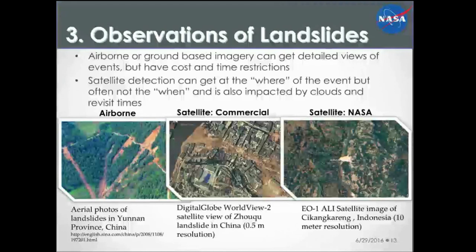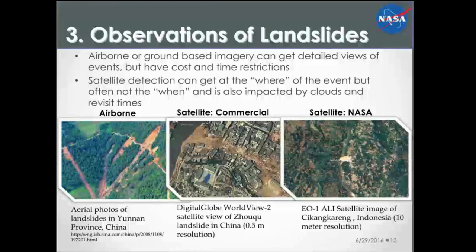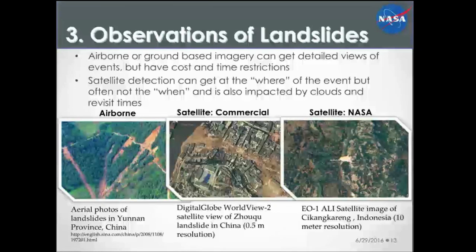How can we observe landslides? There are many ways to observe landslides from space or from airborne sensors. Aerial photos give a very detailed picture — this is an example of landslides in China. Commercial satellite imagery like Digital Globe WorldView data can give very detailed sub-meter resolution views, as shown with the Zhonggu landslide in China. Other satellite observations, such as from NASA's Earth Observing-1 satellite and its Advanced Land Imager instrument, can show a 10-meter resolution landslide image from Indonesia.